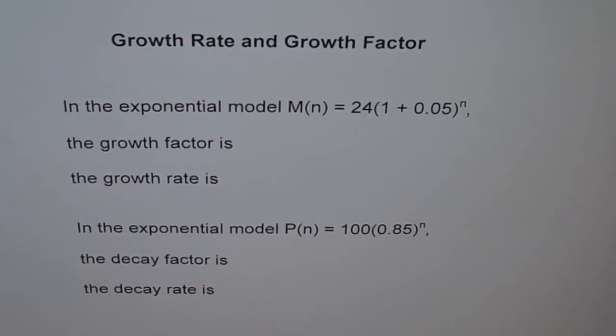For that matter, also decay rate or decay factor. In any exponential function, they are getting every time multiplied by a factor. So when you multiply two terms or two numbers, those two numbers are called factors and the result is always a product. Now, remember that.